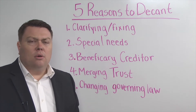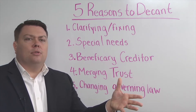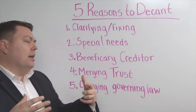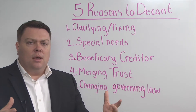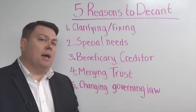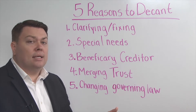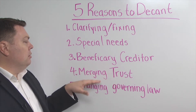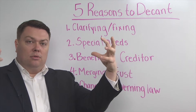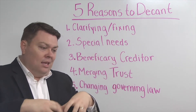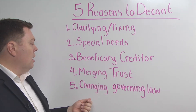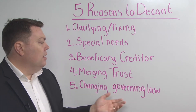The fourth reason is to merge trusts. Let's say you have multiple trusts coming from different sources that essentially have the same terms but are under different tax ID numbers — which is what usually happens after someone passes away and creates a trust. If there are multiple trusts going to the same person, you can merge them all into one trust by decanting those separate trusts into one trust to control all the assets. That's another good reason to decant a trust.